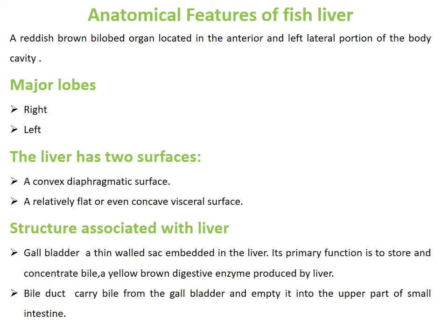The gallbladder is a thin-walled sac embedded in the liver. Its primary function is to store and concentrate bile — a yellow-brown digestive enzyme produced by the liver. Bile ducts carry bile from the gallbladder and empty into the upper part of the small intestine, where they emulsify the fat.